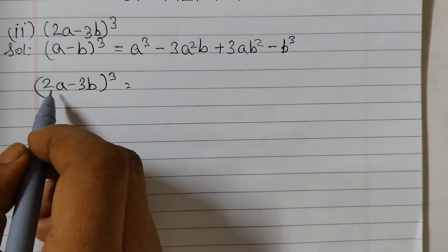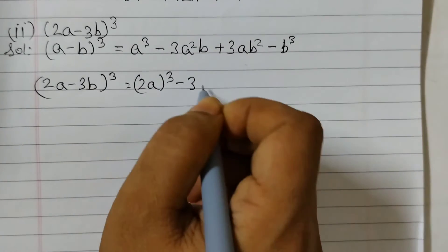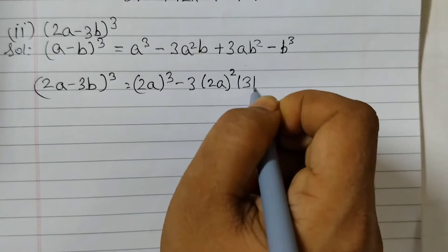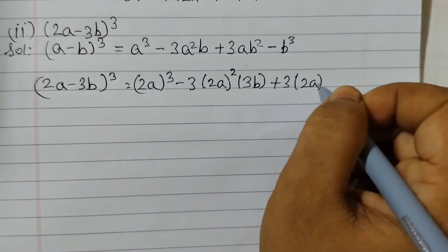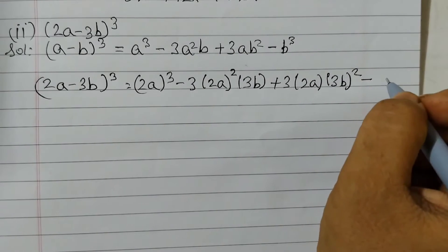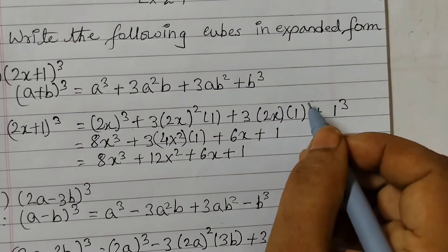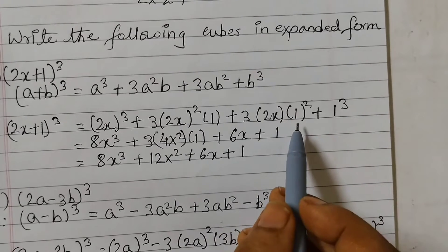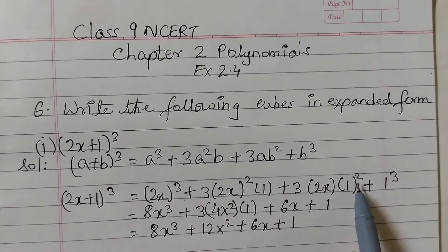Here a is 2a and b is 3b. So we get (2a)³ − 3(2a)²(3b) + 3(2a)(3b)² − (3b)³. Note: I forgot to put a square on the b term earlier — this should be ab². Just put a 2 there; I missed that.